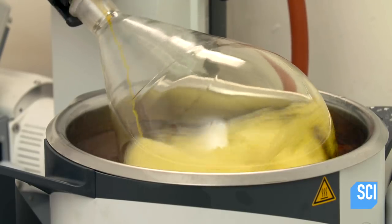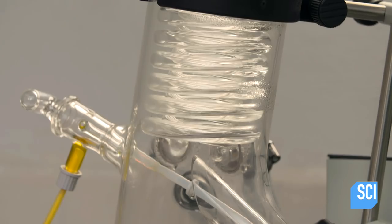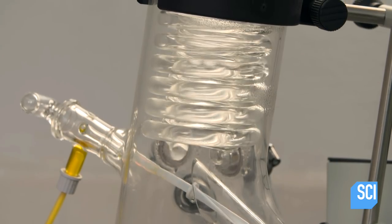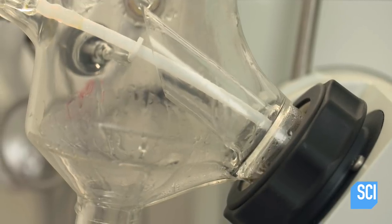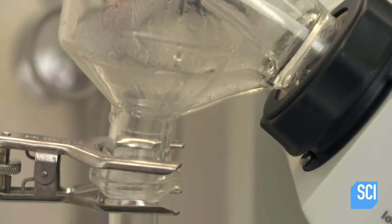The oil vapors rise to a condenser coil, where they reliquify, leaving any residual water and impurities behind. The pure lemongrass oil drips into a receiver flask.